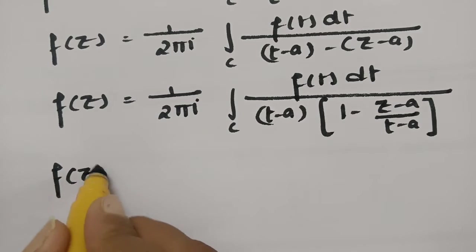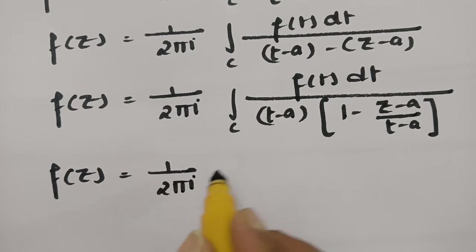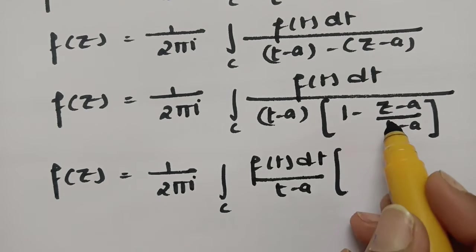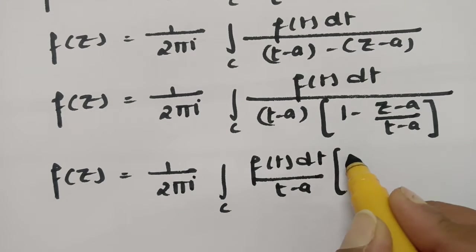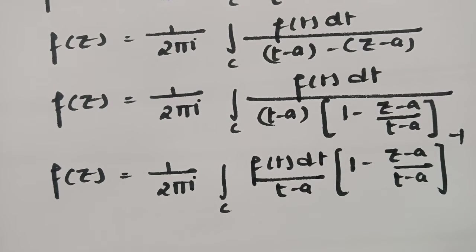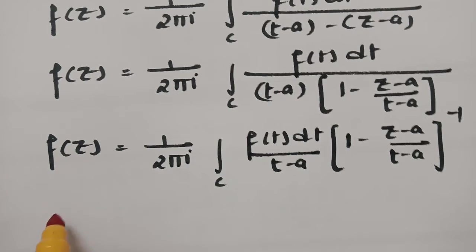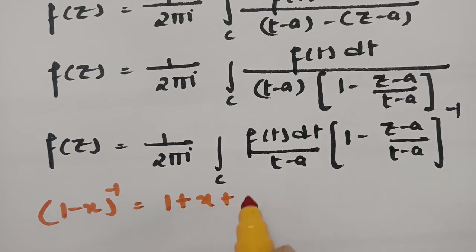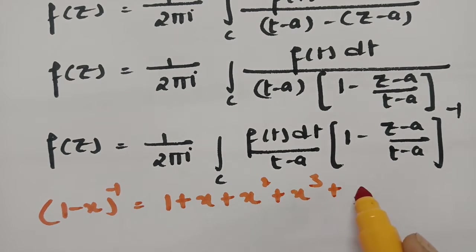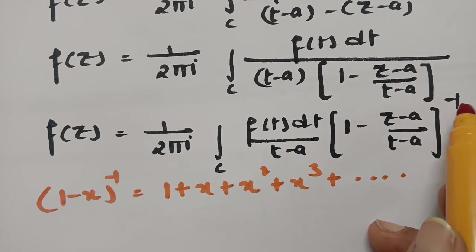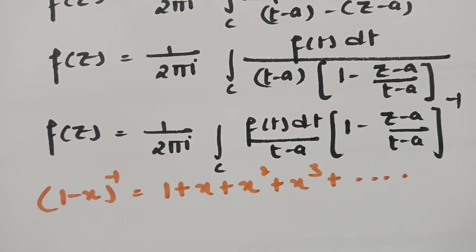So f of z equals 1 by 2 pi i integral c, f of t dt by t minus a, and taking this denominator to the numerator gives 1 minus z minus a by t minus a, whole inverse. According to our binomial expansion, we have the formula: 1 minus x whole inverse equals 1 plus x plus x squared plus x cubed plus and so on. I am considering this as 1 minus x whole inverse, where this whole term is x, and now I am going to expand this.